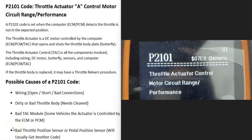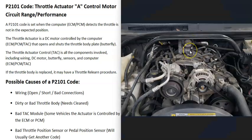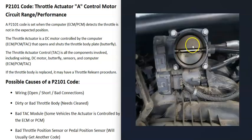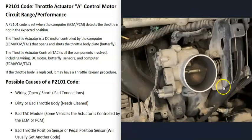Today I'm talking about a P2101 code — what it is and how you go about fixing it. A P2101 is a throttle actuator control motor circuit range/performance code. Basically, engines have a throttle body that controls all the air going into the engine using a butterfly plate. When the gas pedal is pressed, this butterfly plate opens up to let more air into the engine.